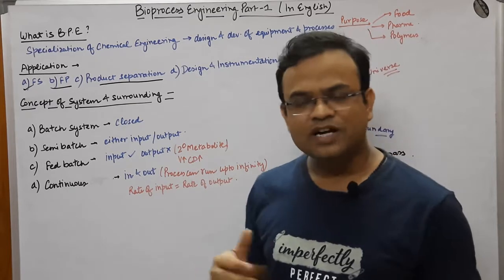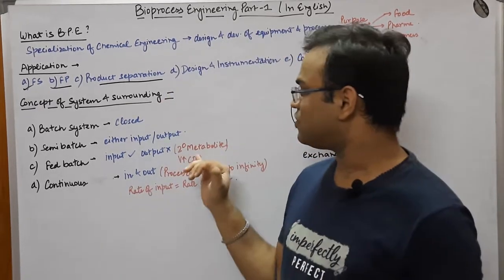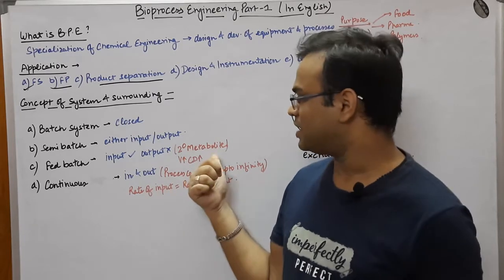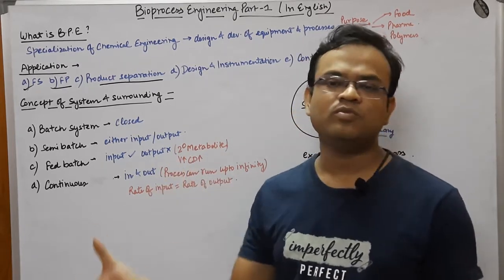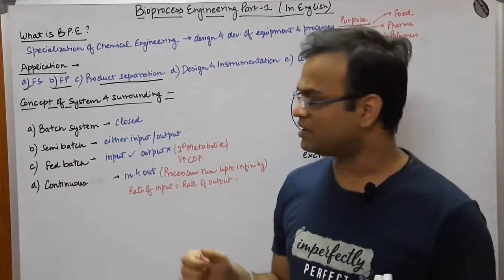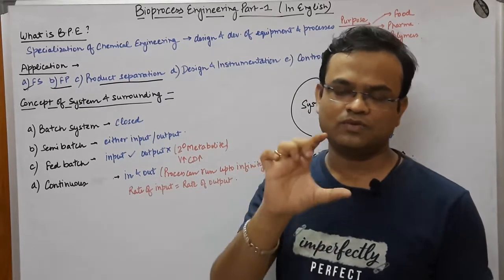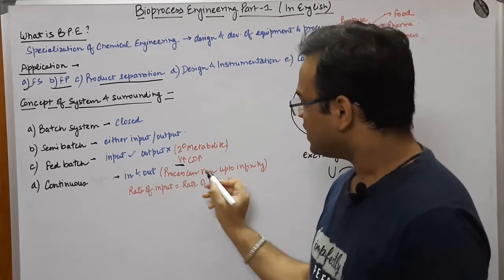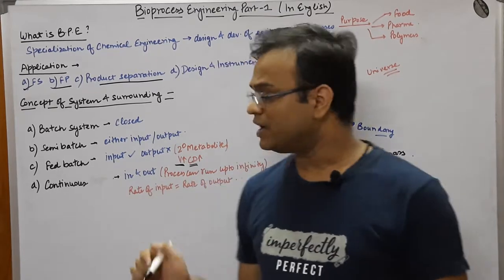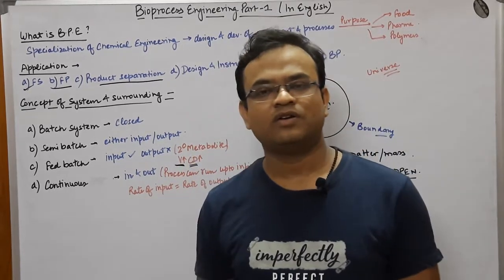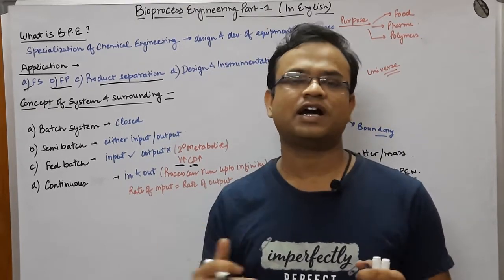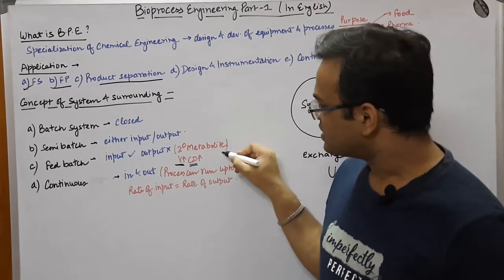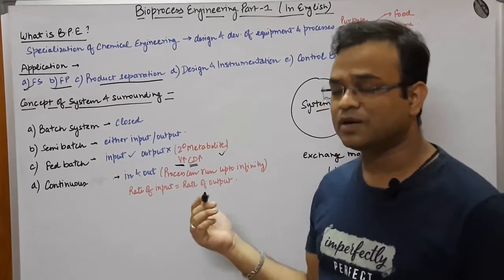Why is the fed-batch system generally used? It is utilized for the production of secondary metabolites. When you add new medium inside the fermenter, the volume inside will increase, and also the cell density (CD) will increase because the cells start multiplying with more nutrients available. This results in higher cell density and higher concentration of secondary metabolites produced.